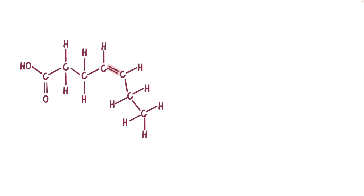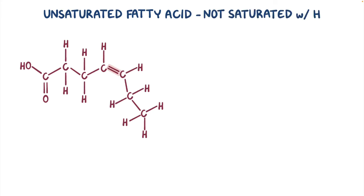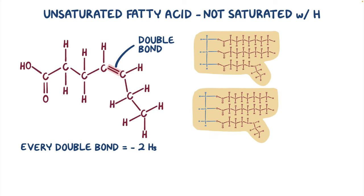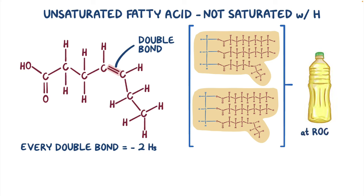Carbons can also have double bonds between them, though, and when a fatty acid has one or more double bonds, it's called an unsaturated fatty acid, because it's not saturated with hydrogen atoms. For every double bond, there are two fewer hydrogen atoms. Also, a double bond causes a kink in the molecule, so the triglycerides don't pack together as nicely as saturated fats. As a result, unsaturated fats are usually liquid at room temperature.